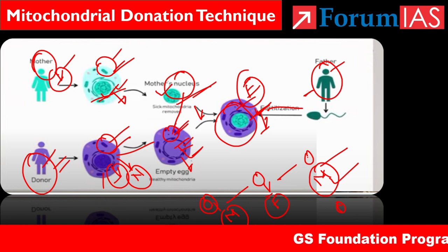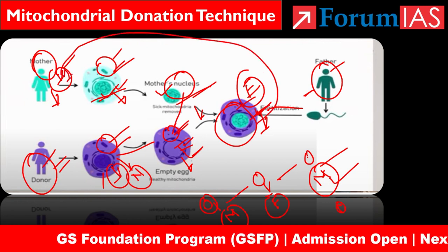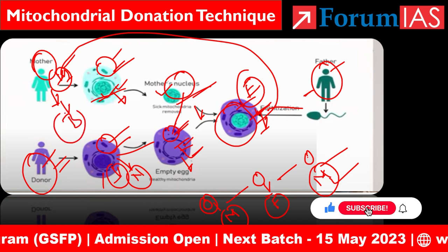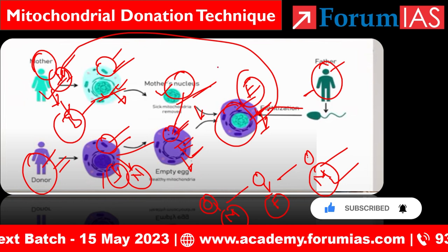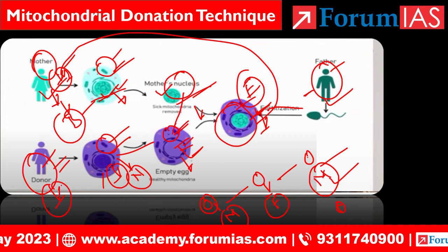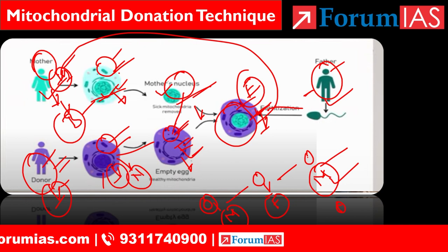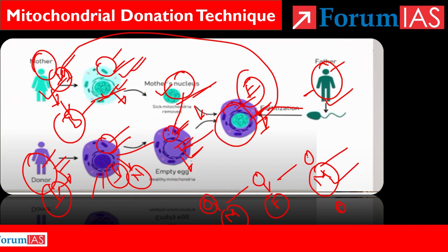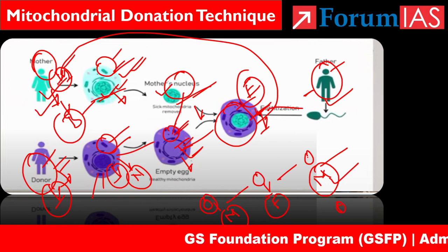This combined egg is grown in the lab, and then fertilized with the father's sperm. After fertilization, the resulting zygote is placed in the own mother's uterus. Finally, the baby is born — this is the 3-parents baby, with DNA from the own mother, the father, and the donor mother.